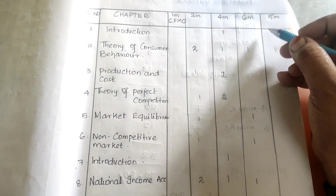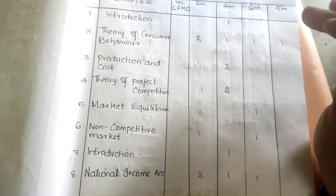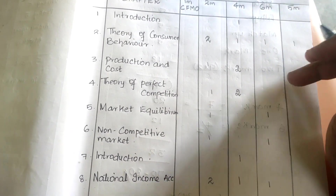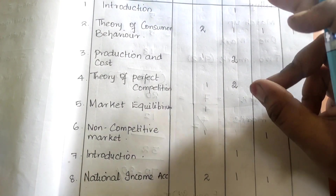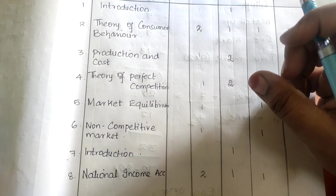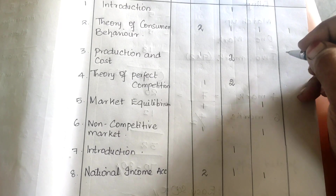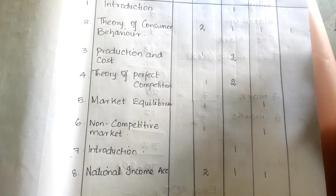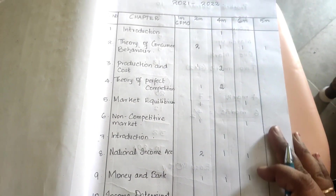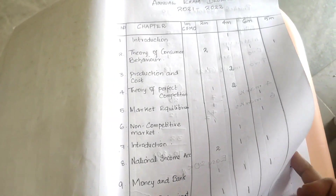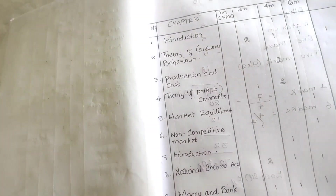For practical oriented questions, one question from the second chapter on consumer behavior will surely be asked. You will also get a question on demonetization and currency. From the third chapter, AP, TP, MP, or AR, TR, MR will be asked. This is how you need to prepare.